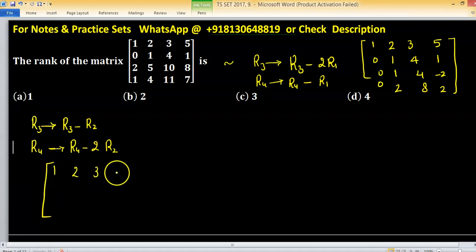So first row is same, 1, 2, 3, 5. Second row 0, 1, 4, 1. Third row 0, 0, 0, and minus 3. Last row 0, 0, 0, 0, and 0.